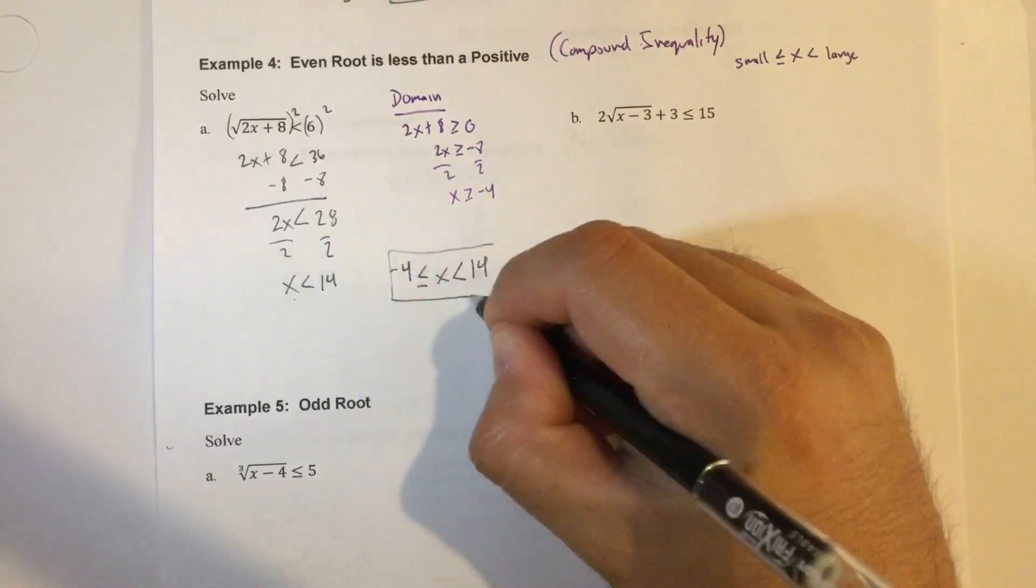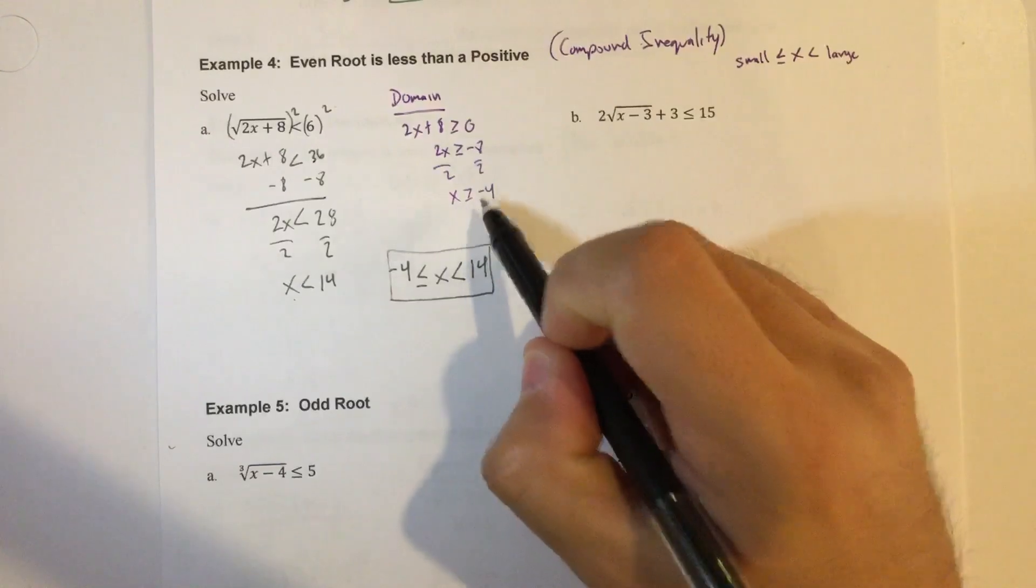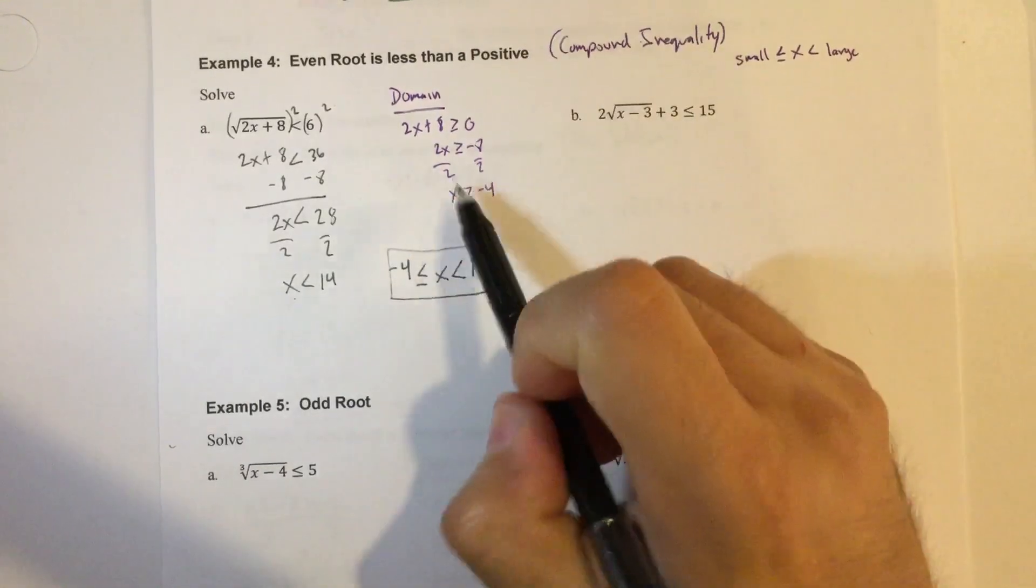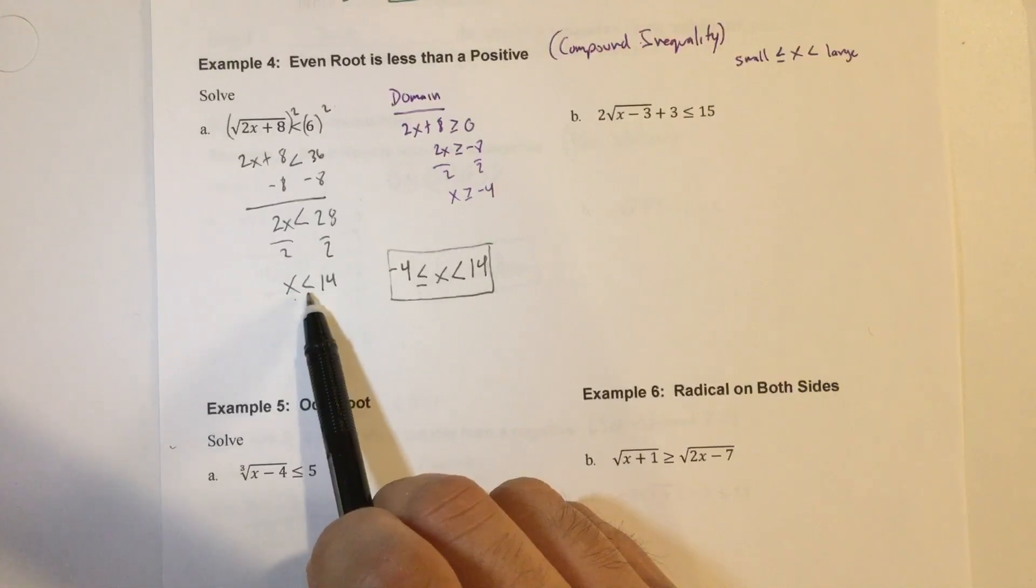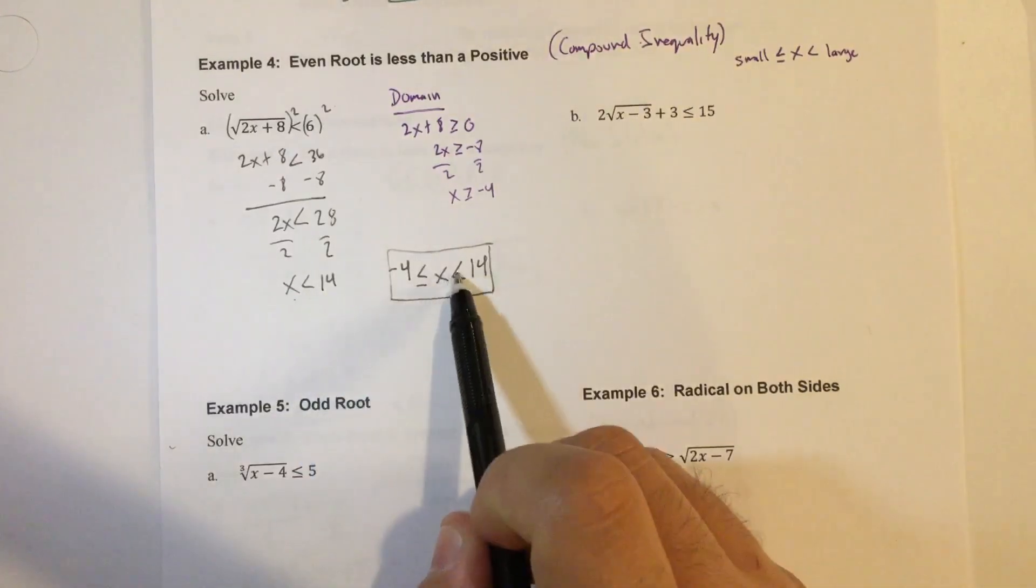So one thing you need to understand here is that the starting point of the square root function, that original point, is a closed circle. This one here is dictated on that sign there. So this says no equal bar, so that's why it's not equal to it here.